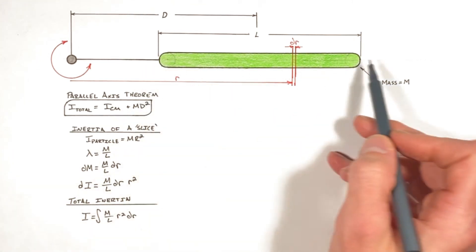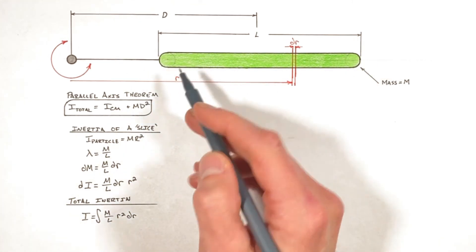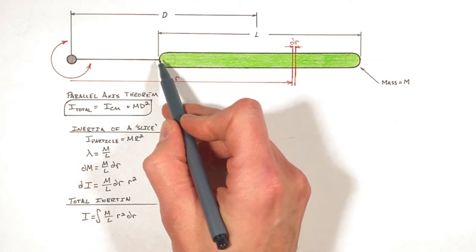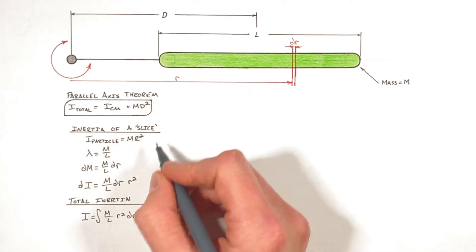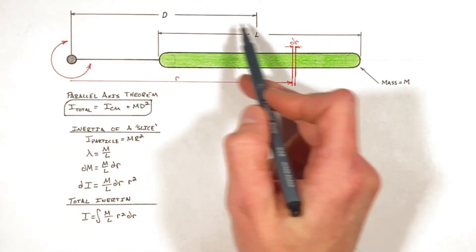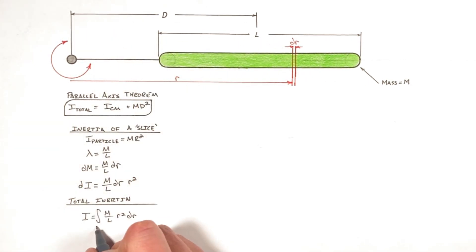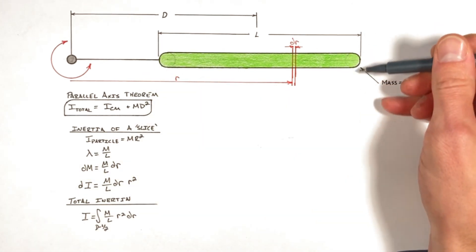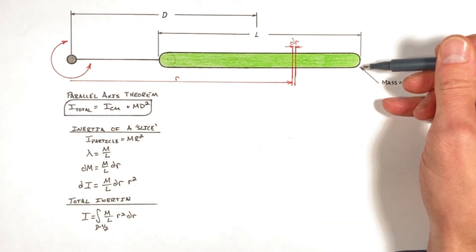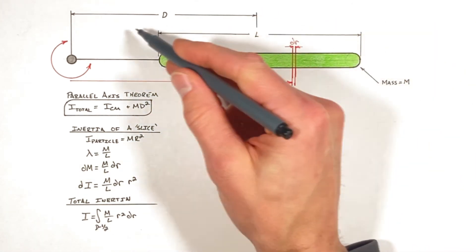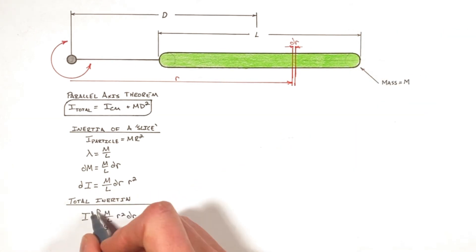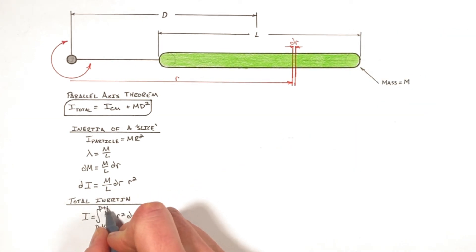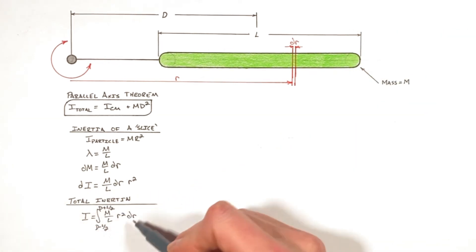The limits of integration are going to reflect these dimensions. The inner edge of the rod is going to be at a radius of d minus l over 2, and the outer edge of the rod is at a radius of d plus l over 2. So we evaluate this integral.